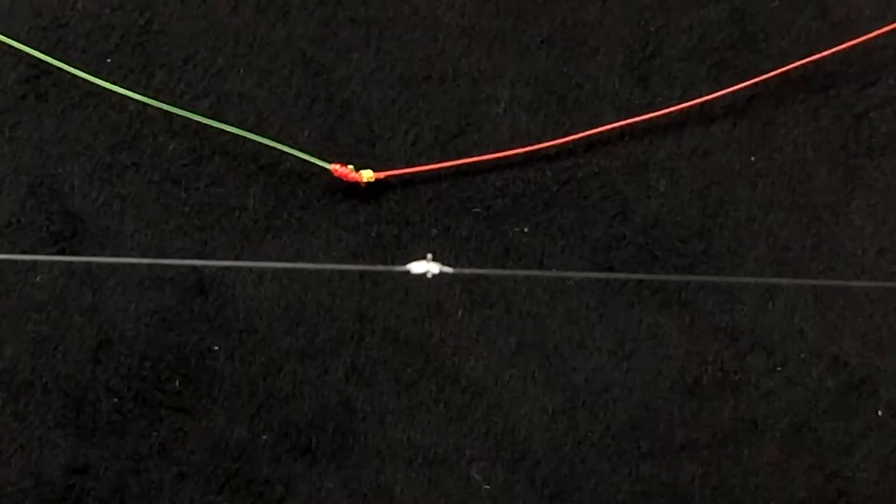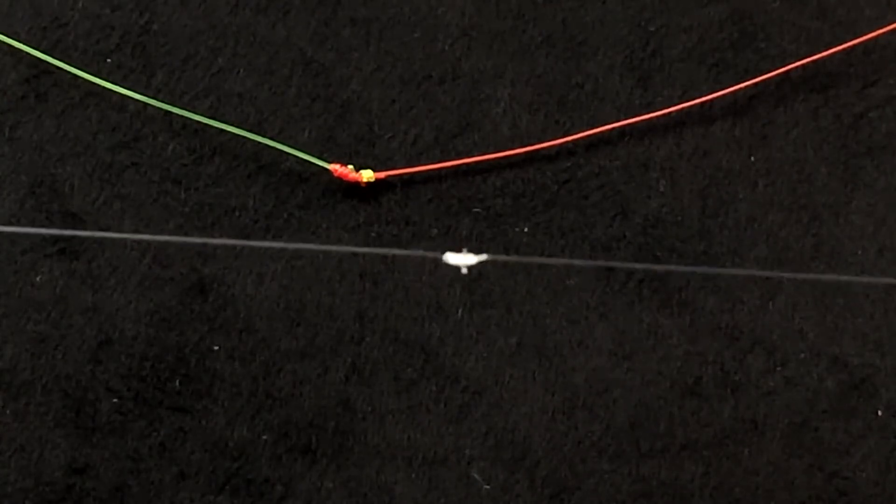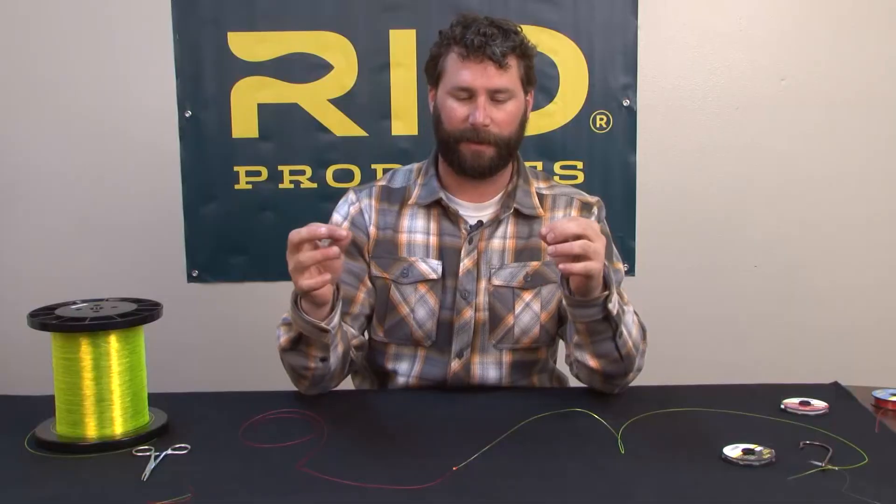Here's the improved blood knot tied with some smaller diameter tippet material. That's the improved blood knot.